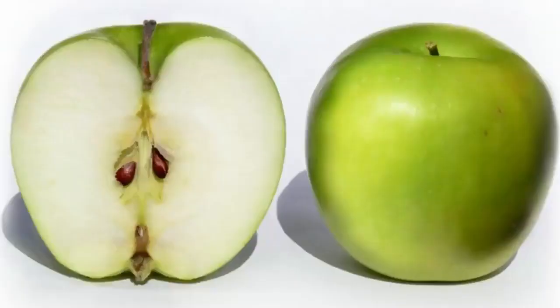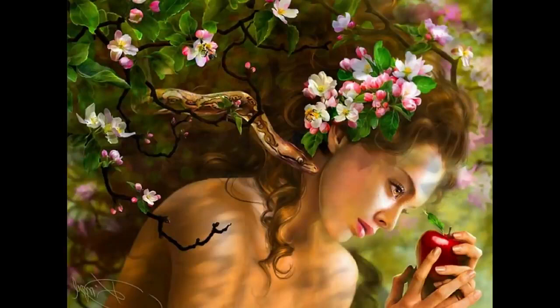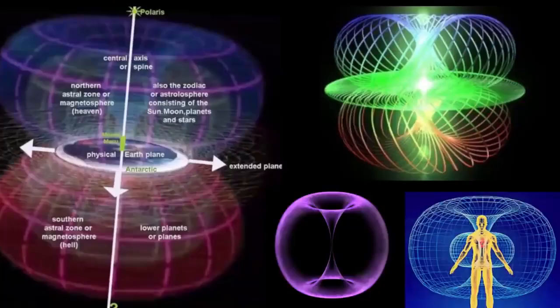What fruit did Satan tempt Eve with in the garden — the center of the Earth? Earth, hidden in plain sight: as above, so below — the microcosm and the macrocosm.